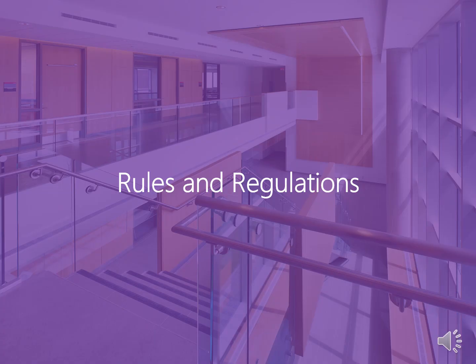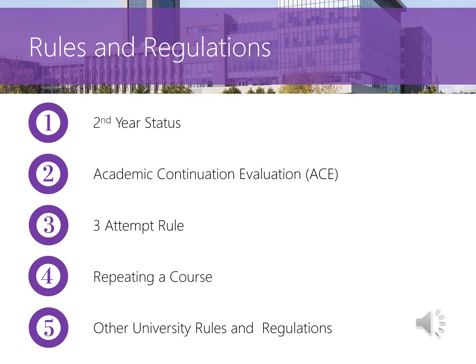Next, let's review some of the university regulations that are most important for you to know about as a first-year student. These include the second year status requirements, academic continuation evaluation or ACE, the three attempt rule, course repetition, and other general university rules and regulations.